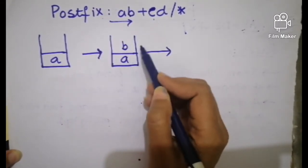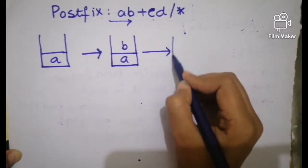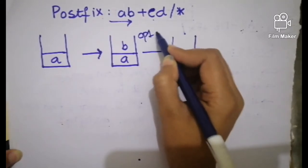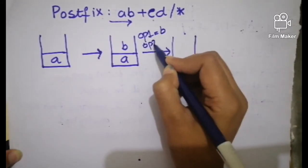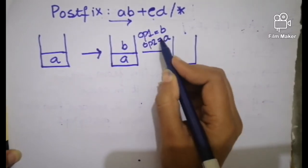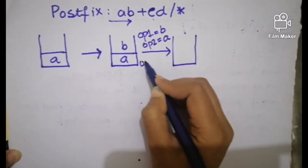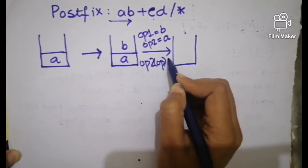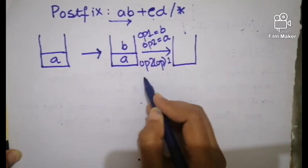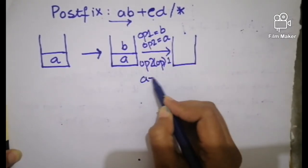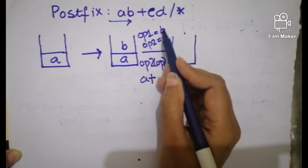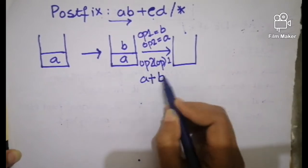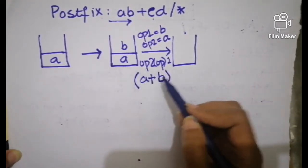The operand one is b and operand two is a. Now the rule is: operand two, operator, operand one. So operand two is a, place the operator — which is plus — between them, and operand one is b. Now place the brackets and push this result into the stack.